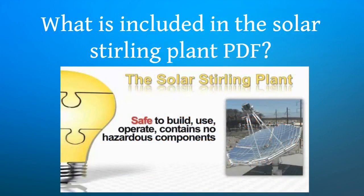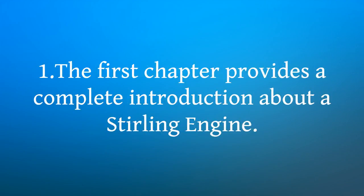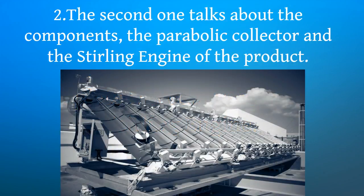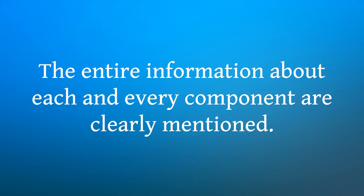What is included in the Solar Sterling Plant PDF? The Solar Sterling Plant PDF has four chapters, and each has its own significance. The first chapter provides a complete introduction about the Stirling engine. The second chapter talks about the components — the parabolic collector and the Stirling engine — of the product. The entire information about each and every component is clearly mentioned.